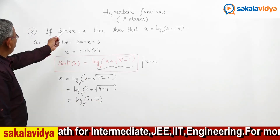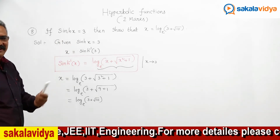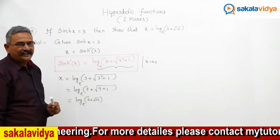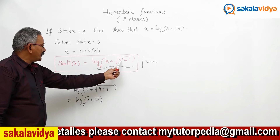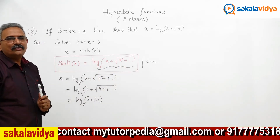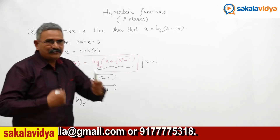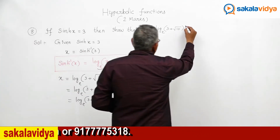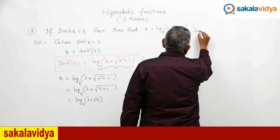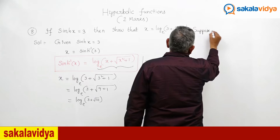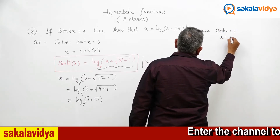Suppose sinh x is equal to 5 — could you find the value? Yes, why not? In the formula, replace x by 5. You get 5 plus root of 5 squared, which is 25 plus 1, giving 26. So the answer would be 5 plus root 26. Let us solve that problem as well, since it may sometimes appear in examinations. Suppose sinh x equals 5 — what is the value of x?